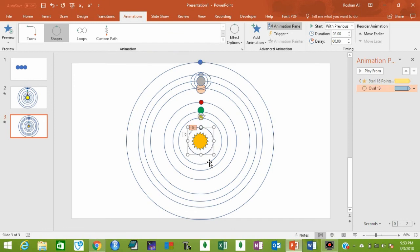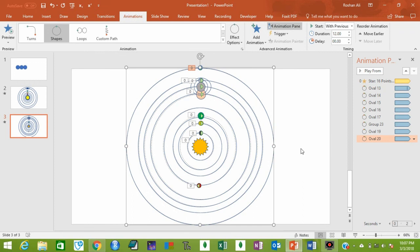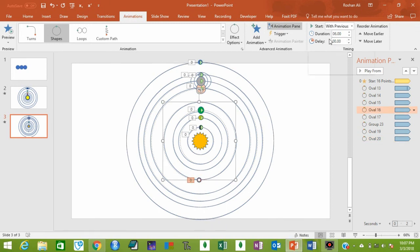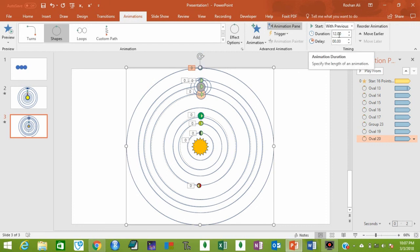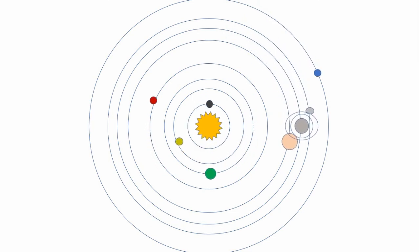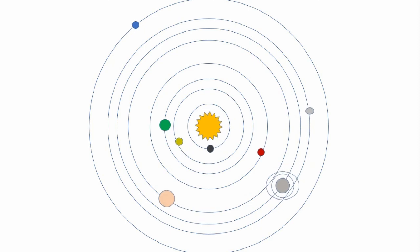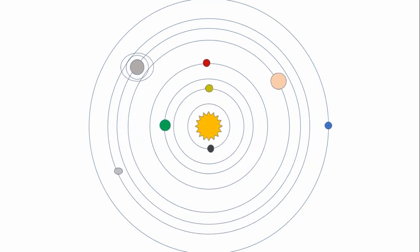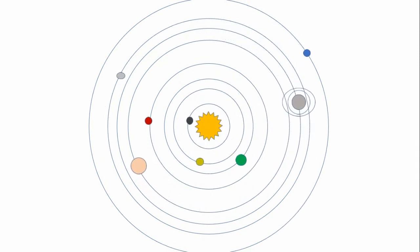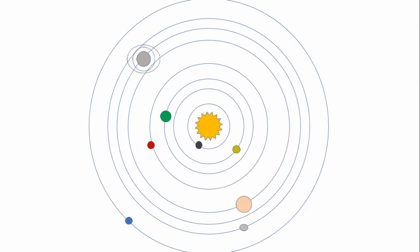Your solar system is ready. I have set the motion paths for all the planets with different durations — for example, Jupiter's duration is six seconds and Neptune's is twelve seconds. Now let's play this: click the Slideshow button and your solar system is ready. Thank you for watching — please subscribe to my YouTube channel. Bye bye!